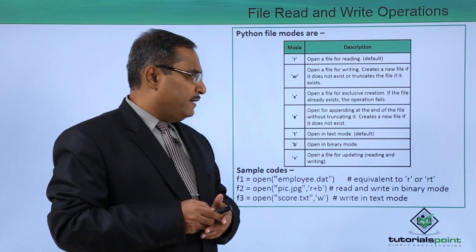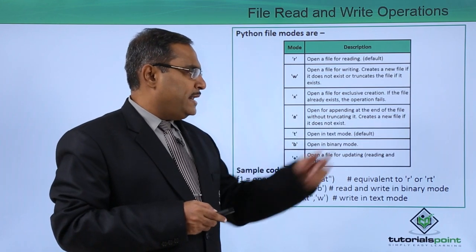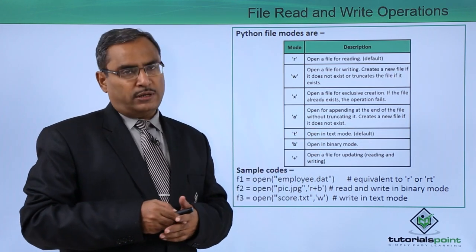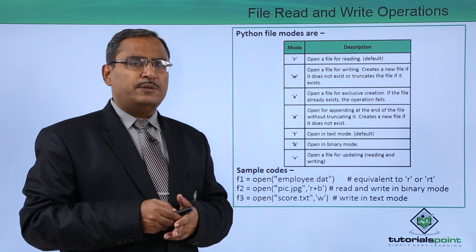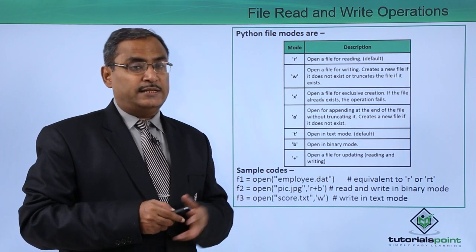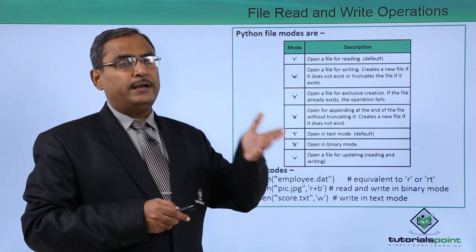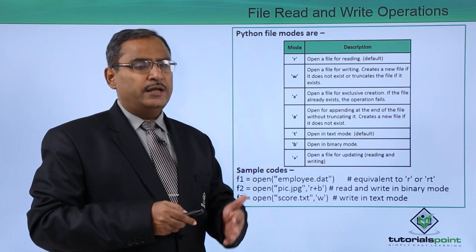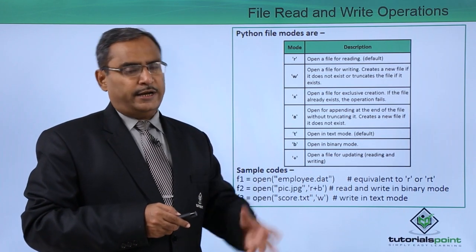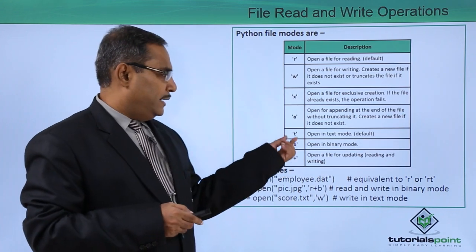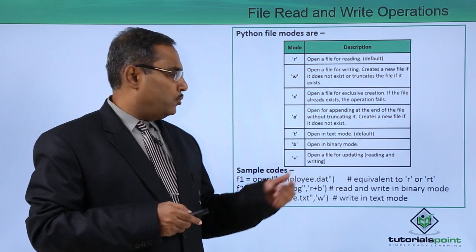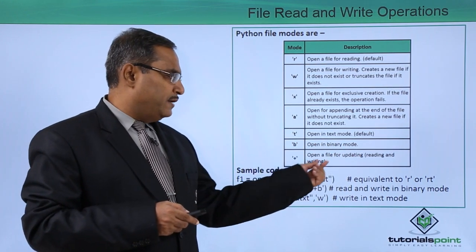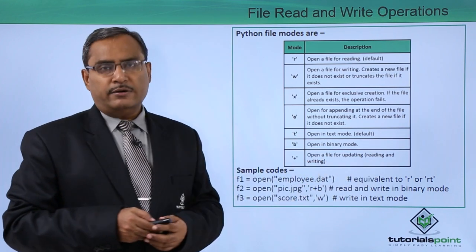In case of A mode — open a file for appending at the end of the file without truncating it; creates a new file if it does not exist. In append mode, if the file is pre-existing, it gets opened and the new content is appended. If the file does not exist, it gets created under the given name. T — open the file in text mode. B — open the file in binary mode. Plus (+) means open a file for updating, that is reading and writing mode.